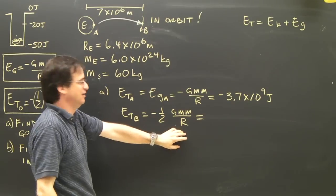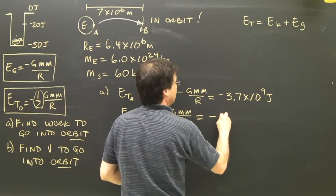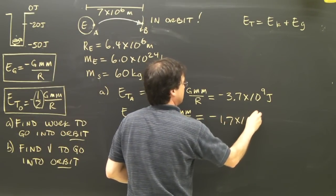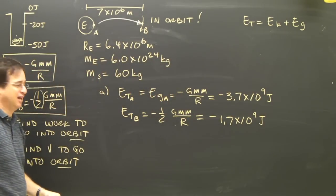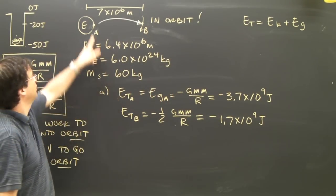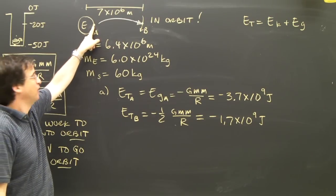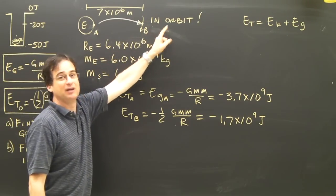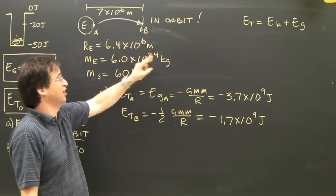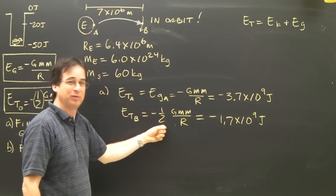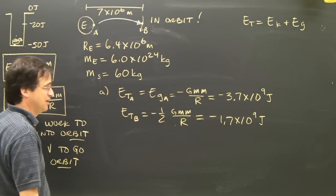So I plug that in and I should get negative 1.7 times 10 to the 9 joules. The mistake I get a lot on tests is that people find the total here, they use negative GMm over r. They find the total here in orbit, but they just say it's GMm over r, like they did when it was just sitting there or put up there. It's in orbit. When an object's in orbit, the total energy is given by that formula.